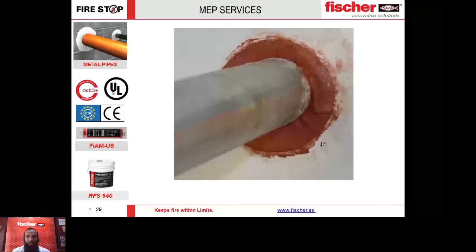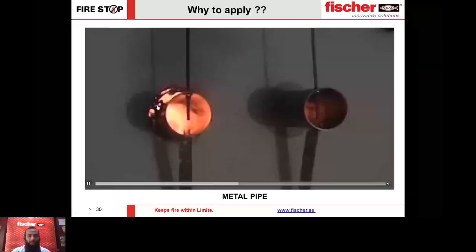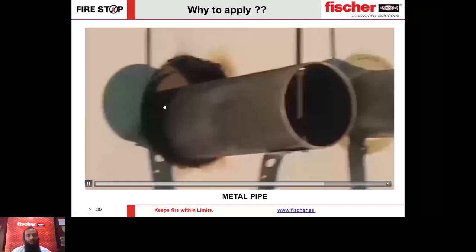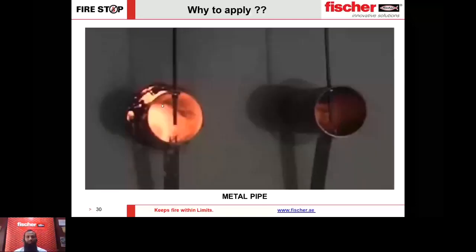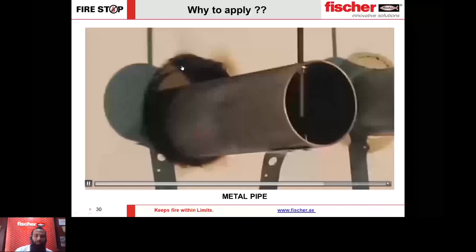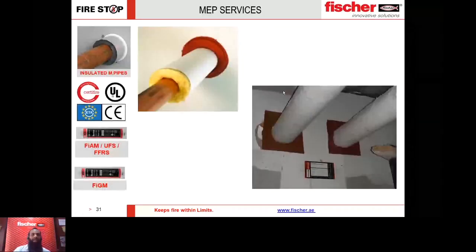For metallic pipes we propose our sealant FIAM US — just 6 mm thick — for pipes up to 600 mm diameter or more. For multiple metallic pipes you can also use RFS at just 3 mm thick. These are some of the most efficient sealants available. Be aware that PU foams are sometimes marketed as firestop foams but none of the PU foams are tested for MEP services — the consequence of using the wrong product can be seen clearly in testing.